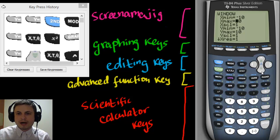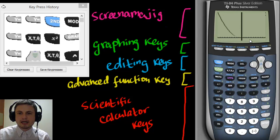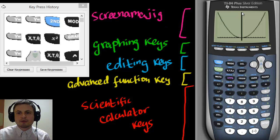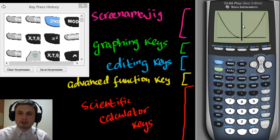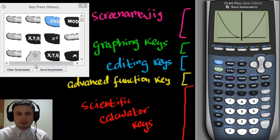Go down to Y max — the maximum value for y — and change it to 100. Now click Graph again and you can see the quadratic function with y going up to 100. This is how you change the window mode. A lot of students forget how to use this, but it's really really important.